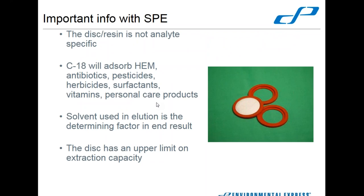Some important things to remember about solid phase extraction. The disc, the resin, is not generally analyte-specific. C18 will absorb all sorts of things including HEM—antibiotics, pesticides, herbicides, surfactants, vitamins, personal care products, all kinds of things. The actual selectivity of the technique comes from the solvent you use, and that's why that mandate on no-cosolvent elutions is so important. You have to use hexane and only hexane so you don't affect anything else being dissolved and eluted out.